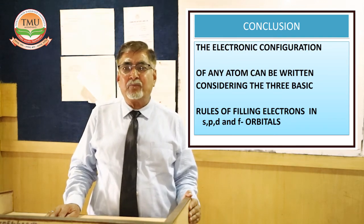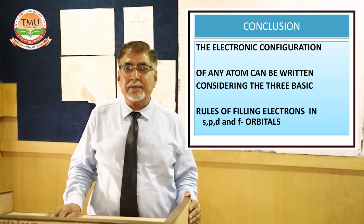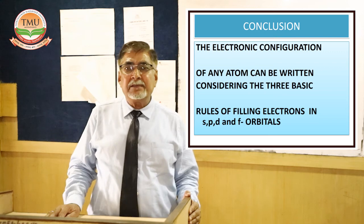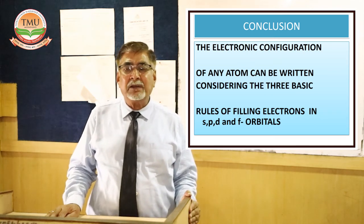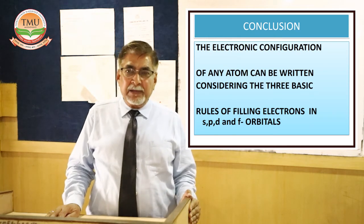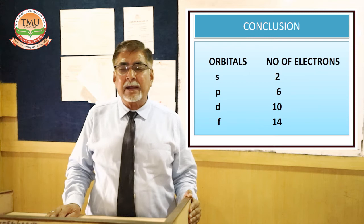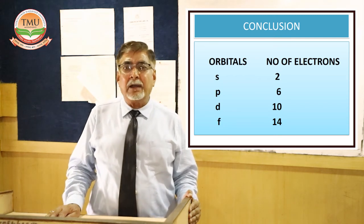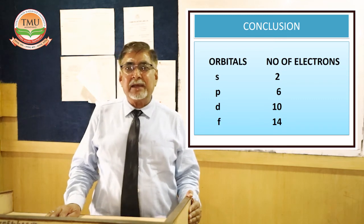All three rules are very important for writing the electronic configuration of elements, and this knowledge is very beneficial for students. Without knowing electronic configuration, we cannot determine the chemical properties of an element. On the basis of electronic configuration, we can identify the group number and period number. The modern periodic table consists of 1 to 18 vertical columns called groups and 7 horizontal rows called periods.